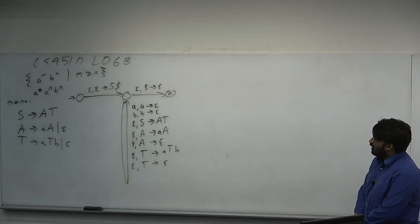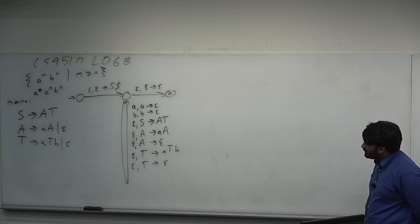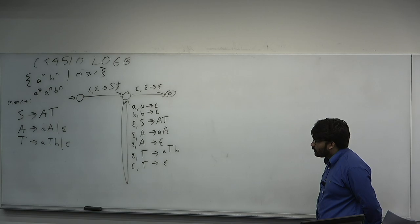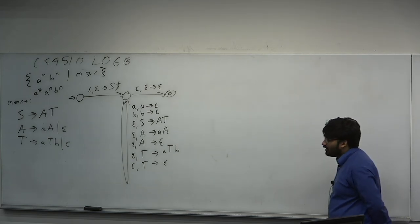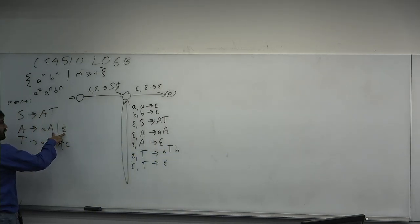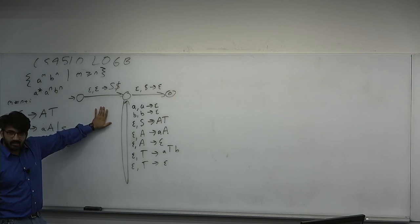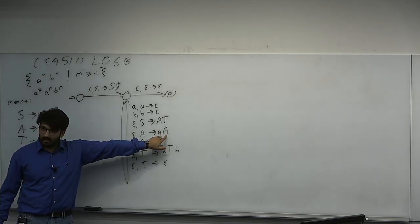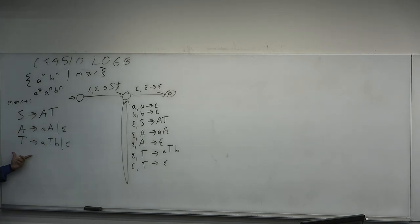Notice that the non-determinism of the PDA and the context-free grammar align up nicely. The context-free grammar is non-deterministic — it chooses which productions to apply. Similarly, when A is at the top of the stack, the PDA non-deterministically chooses between pushing aA or epsilon. That exactly mirrors the non-determinism of the context-free grammar. So the non-determinism of the PDA is what simulates the non-determinism of the grammar.